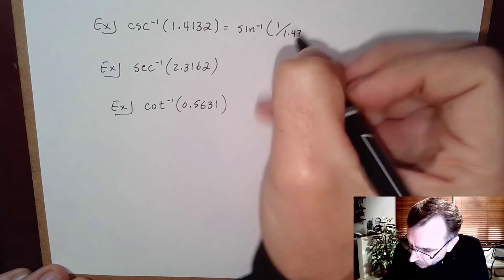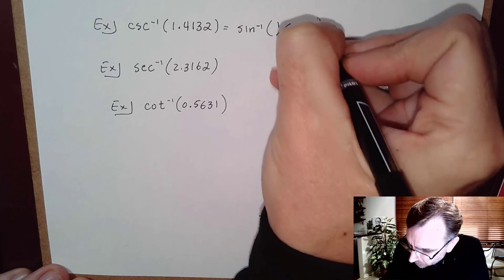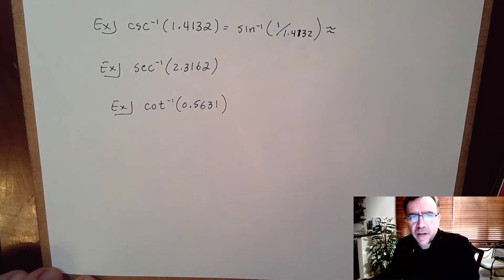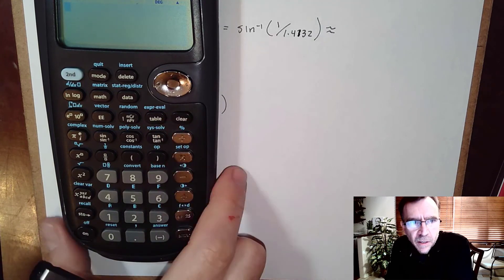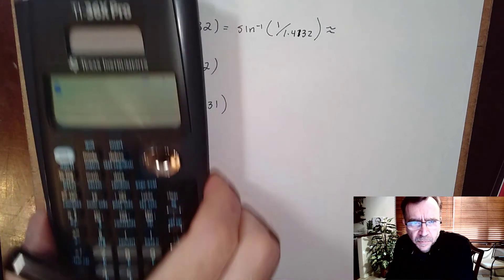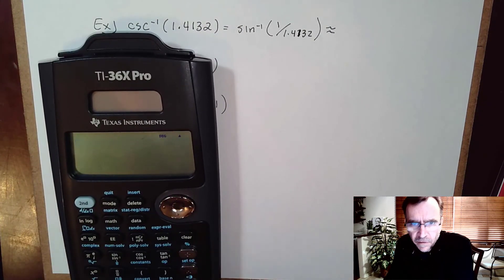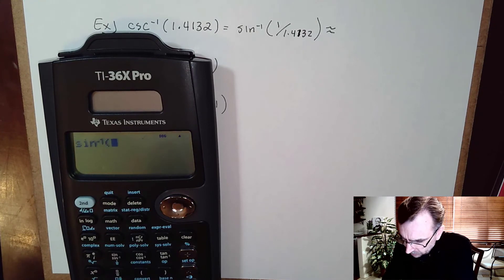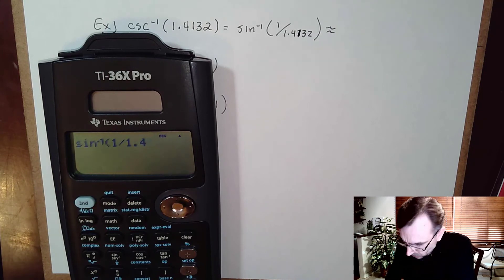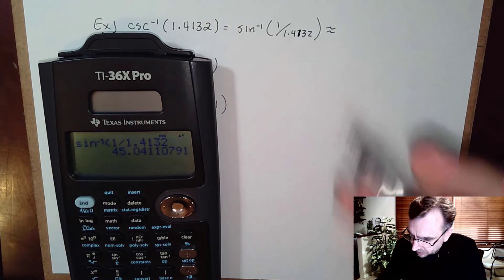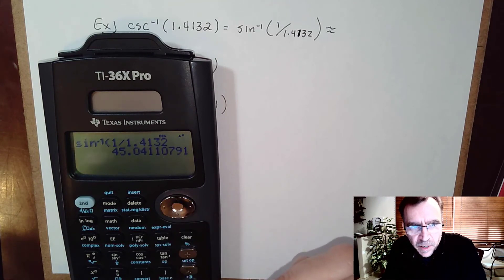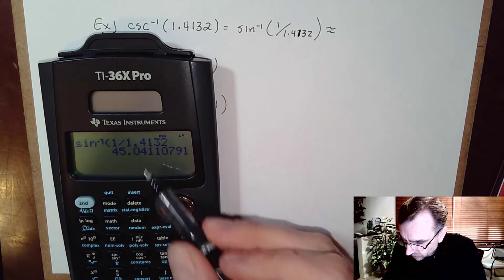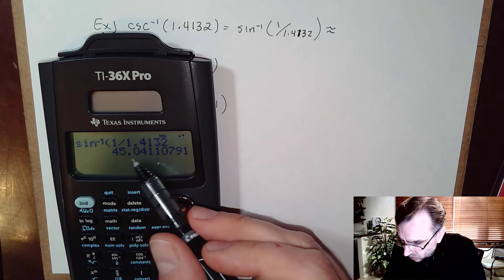Typing sine inverse of 1 over 1.4132 into the calculator gives approximately 45.0 degrees. We round to one decimal place in degree mode, so the answer is 45.0 degrees.